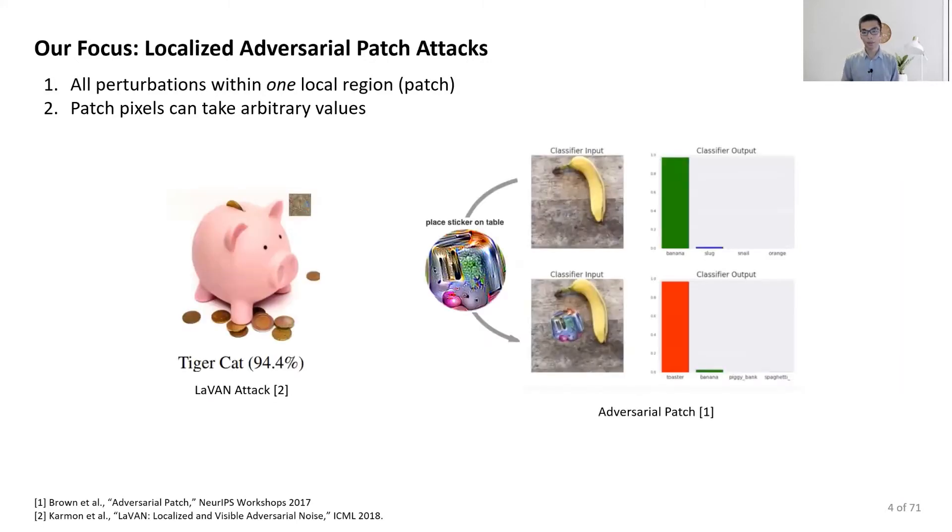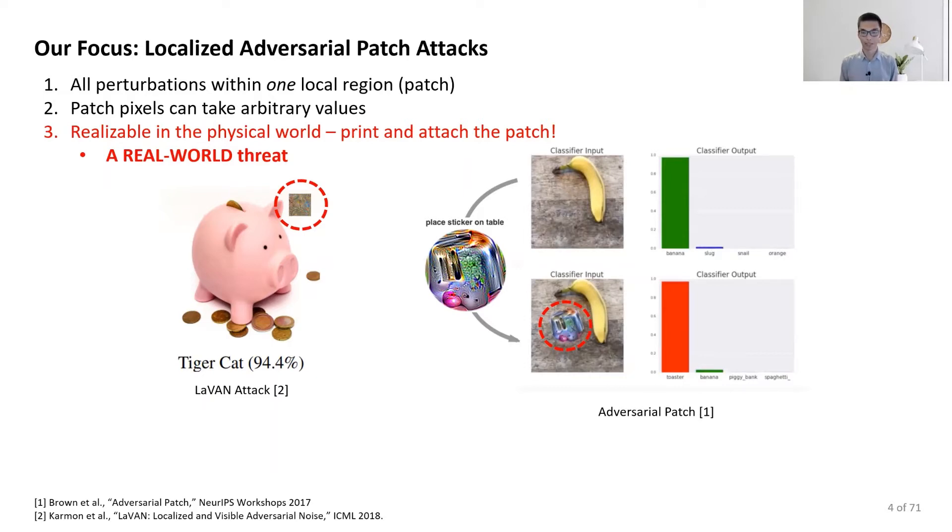Here are some examples. Patches are perceptible, but perturbations are localized. The most interesting thing is that this attack is realizable in the physical world. An attacker can print and attach the patch to the victim object, and this imposes a real-world threat, a threat we as the security community want to mitigate.